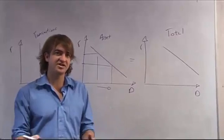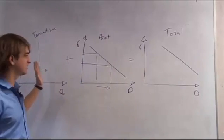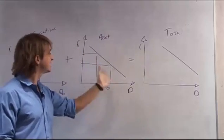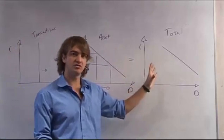So just remember that transactions demand is irrespective of the interest rate. Asset demand is decreasing with the interest rate. It increases as the interest rate decreases, and you can sum them both up to get total demand.